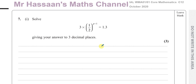First it says solve the equation: 3 times a half to the power of P minus 1 equals 1.3. Give your answer to 3 decimal places. The fact we have to round the answer to 3 decimal places is a clue that we can't use the normal method for exponential equations.